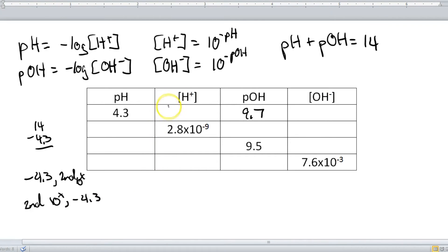And when you do that, what you get is 5.01 times 10 to the negative 5th power.